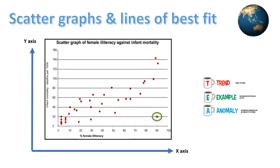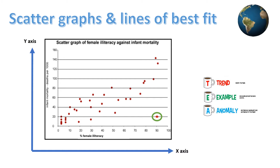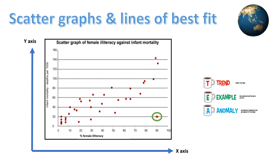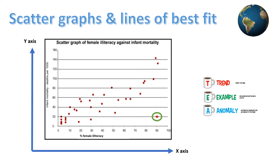We can see this because the dots go up diagonally from left to right. This is not true for every nation though, as we can see in the green circle there are anomalies or outlier results which do not match the general pattern.